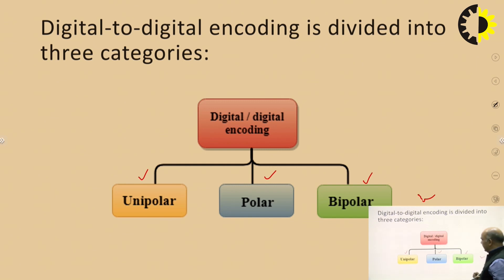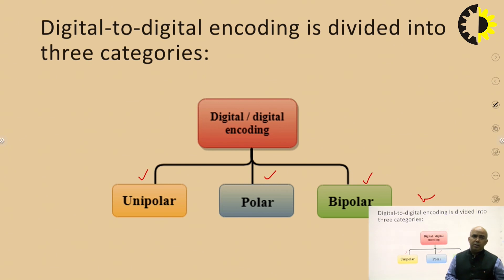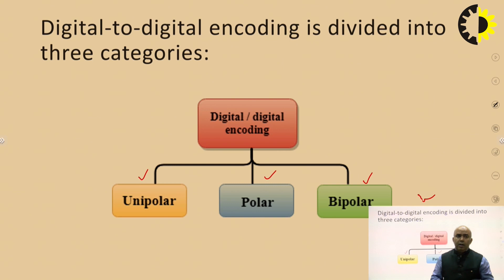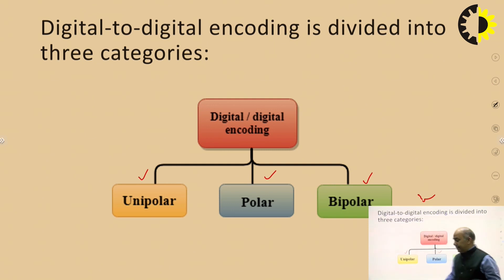Digital-to-digital encodings are basically categorized into three categories: one is unipolar, another is polar, and another is bipolar. Initially unipolar was used, but now polar and bipolar are being used in order to transmit data.